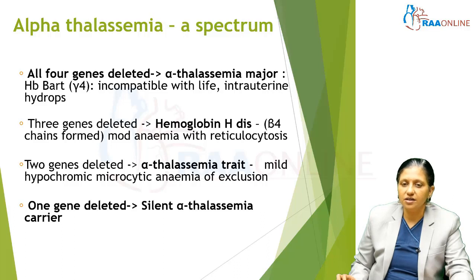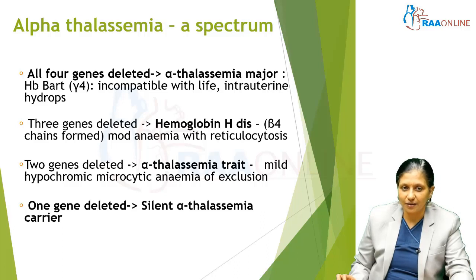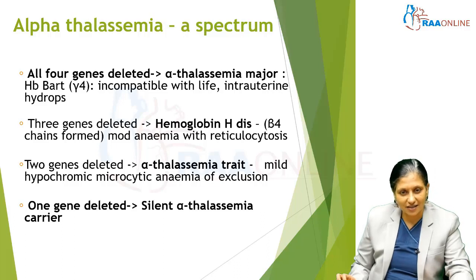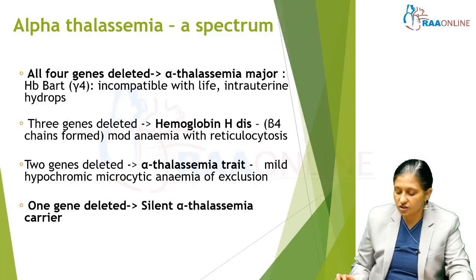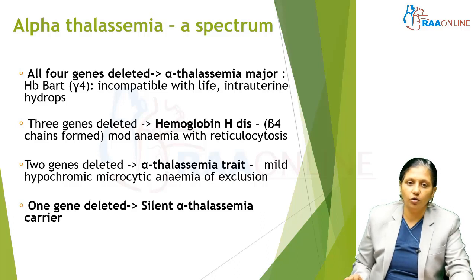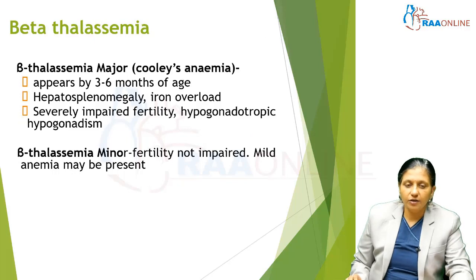If two genes are deleted, it is called alpha thalassemia trait — there is mild hypochromic microcytic anemia of exclusion. If only one gene is deleted, it is a silent alpha thalassemia carrier. So: four genes deleted is incompatible with life, one gene deleted is silent, two genes deleted is alpha thalassemia trait, and three genes deleted is Hemoglobin H disease.